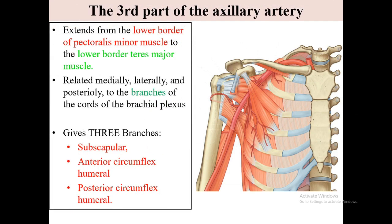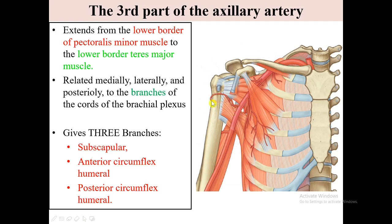The third part of the axillary artery extends from the lower border of pectoralis minor muscle to the lower border of teres major muscle. It is related medially, laterally, and posteriorly to the branches of the cords of the brachial plexus. The third part gives three branches: number one, the subscapular artery; number two, the anterior circumflex humeral artery; and number three, the posterior circumflex humeral artery.